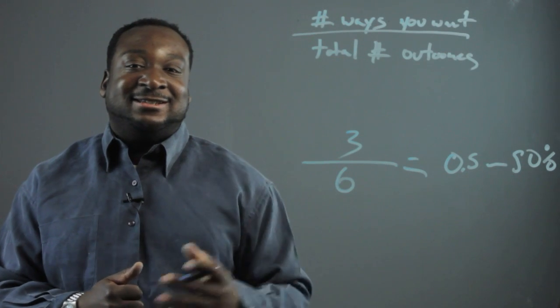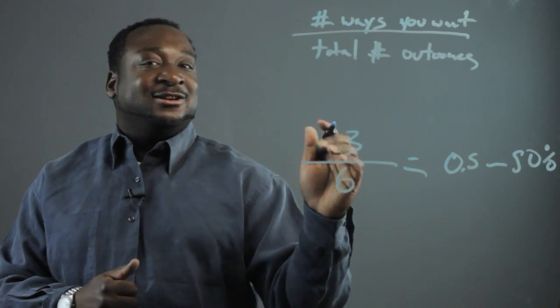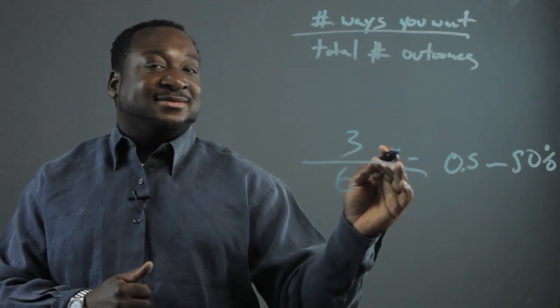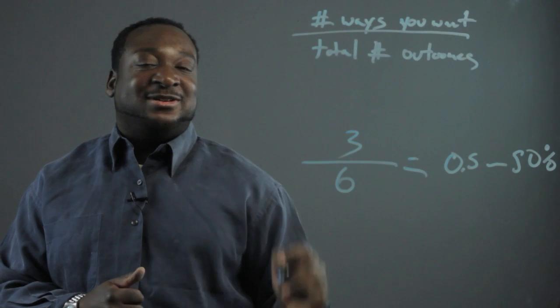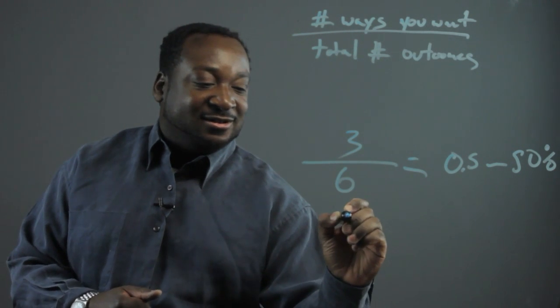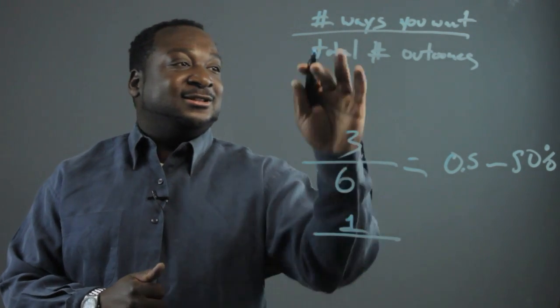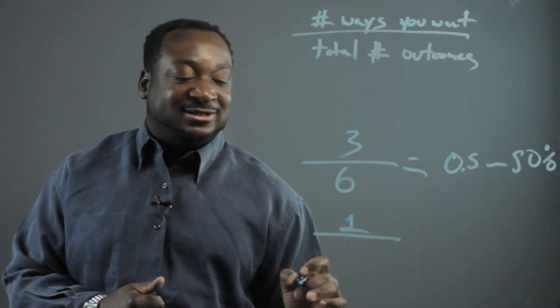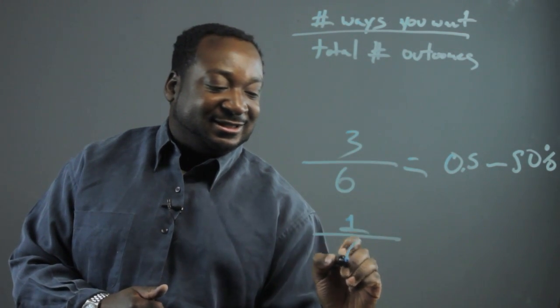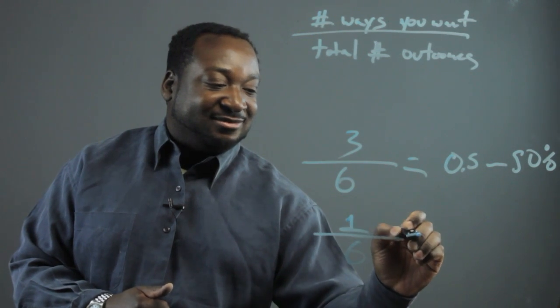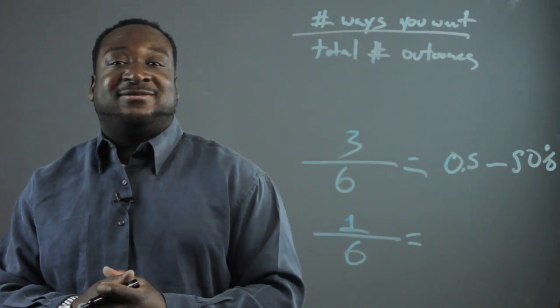Another thing you could do is the probability that a three would come up. There's only one way that a three could come up over the total number of outcomes, which is six. And you get your probability for that.